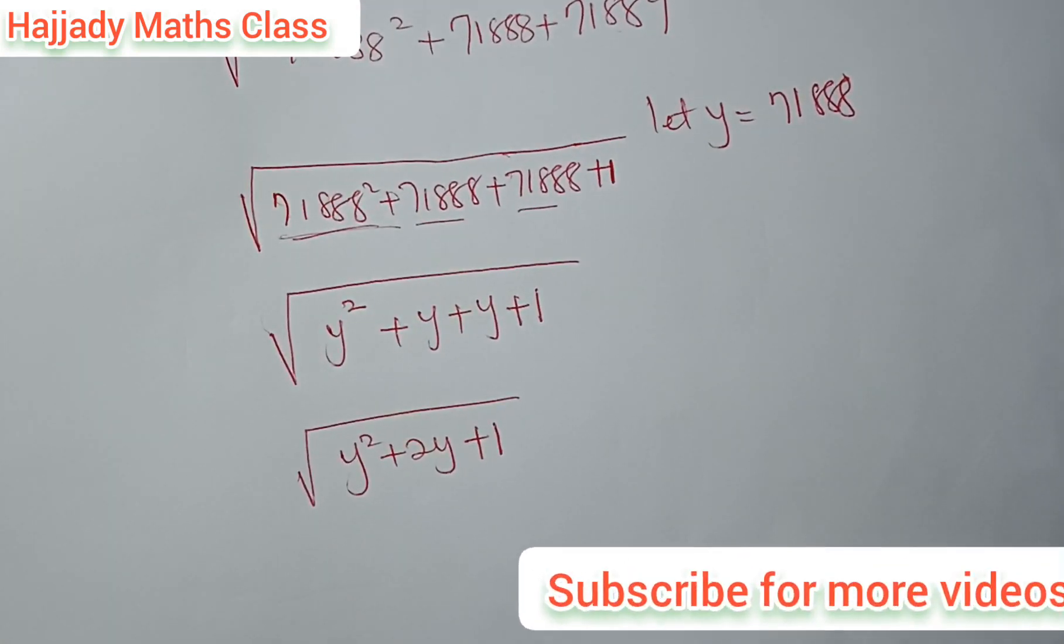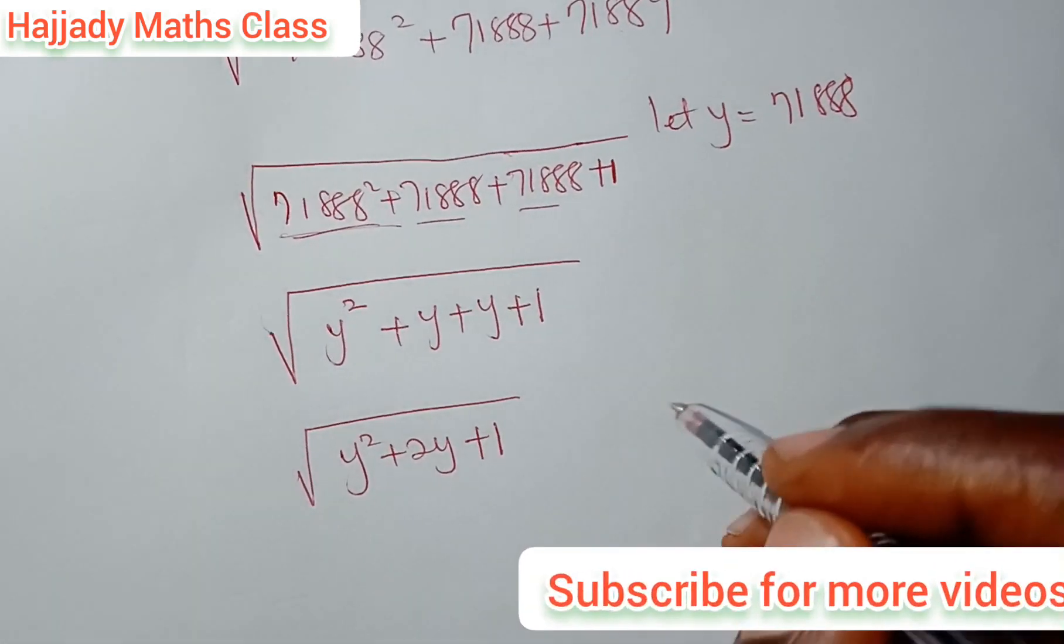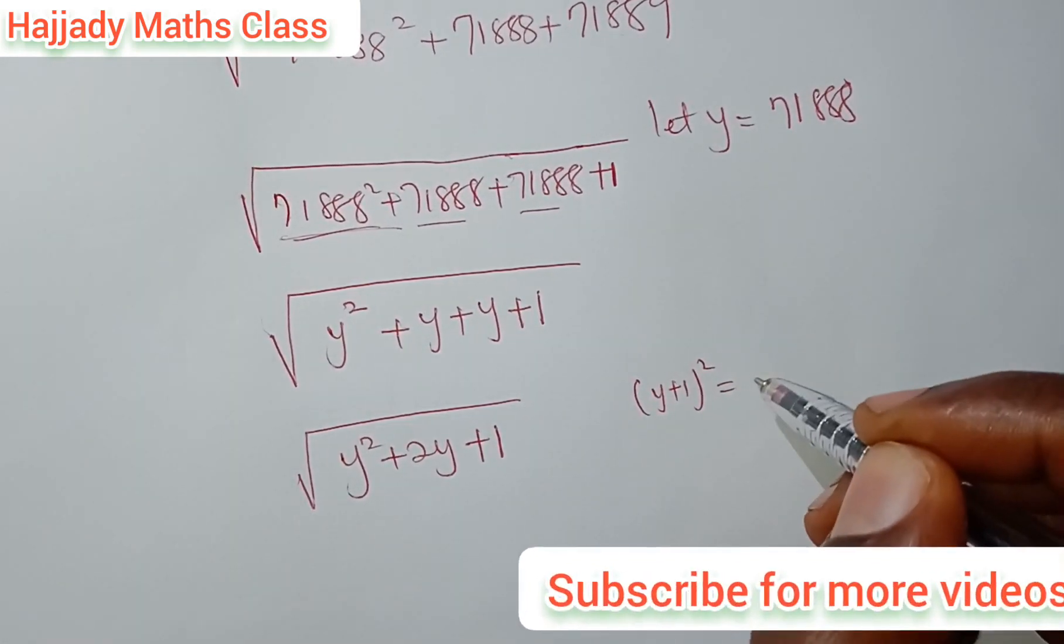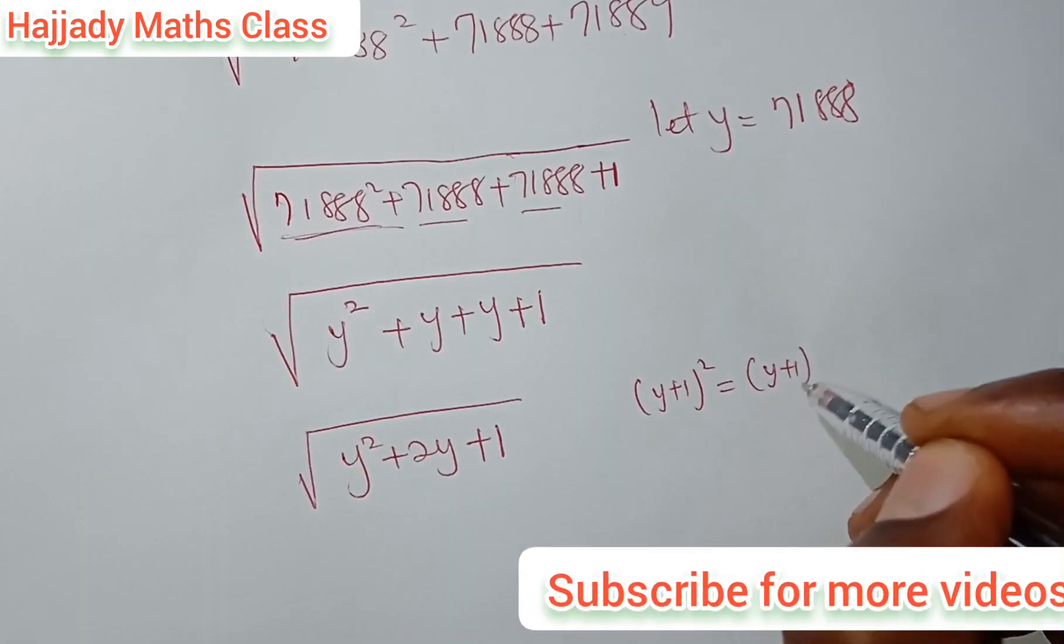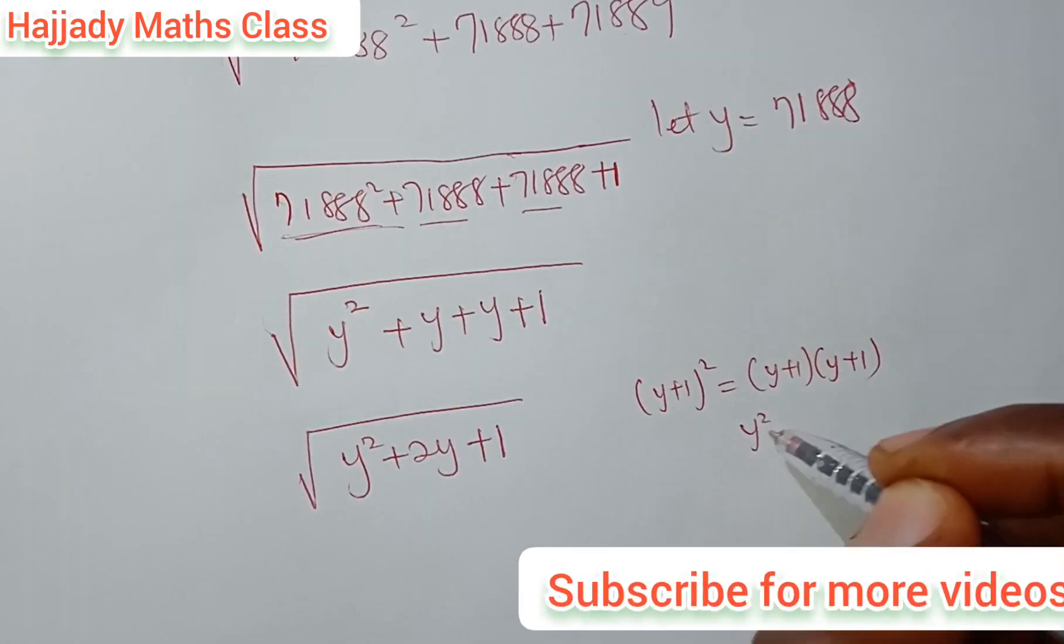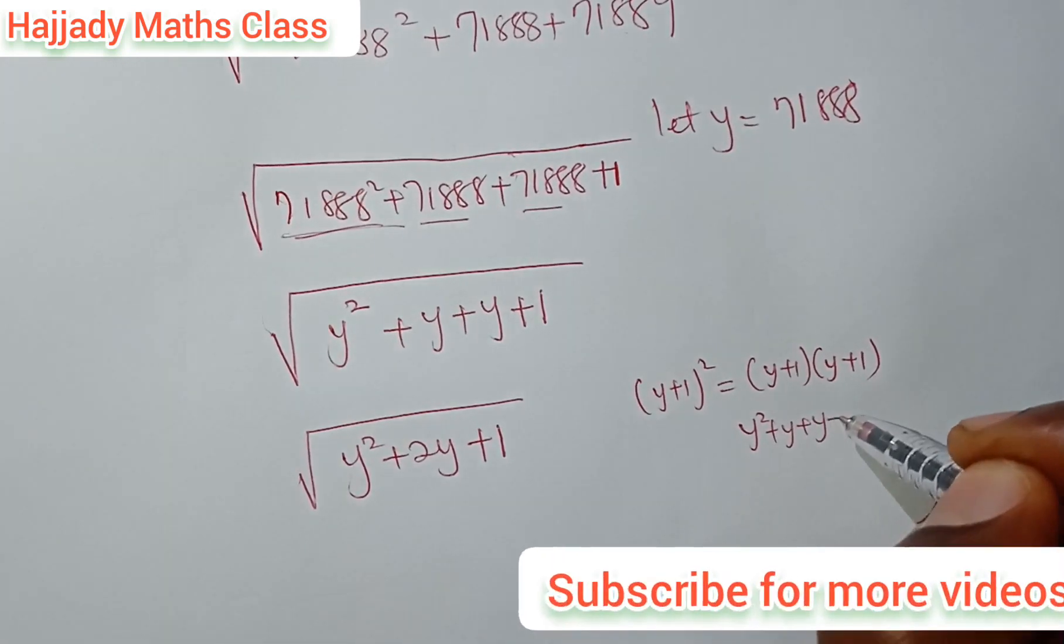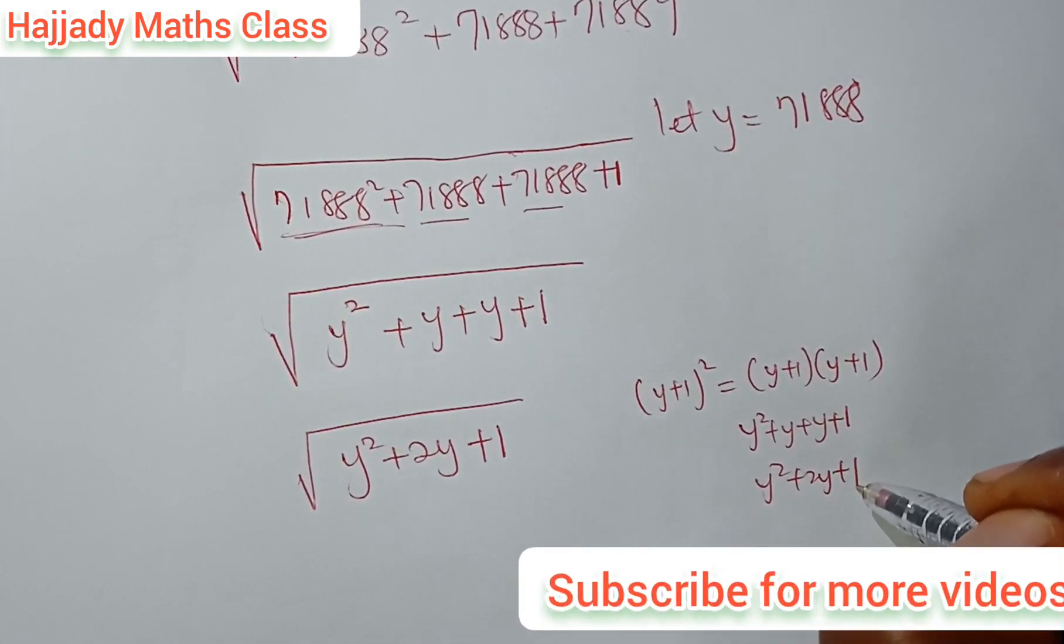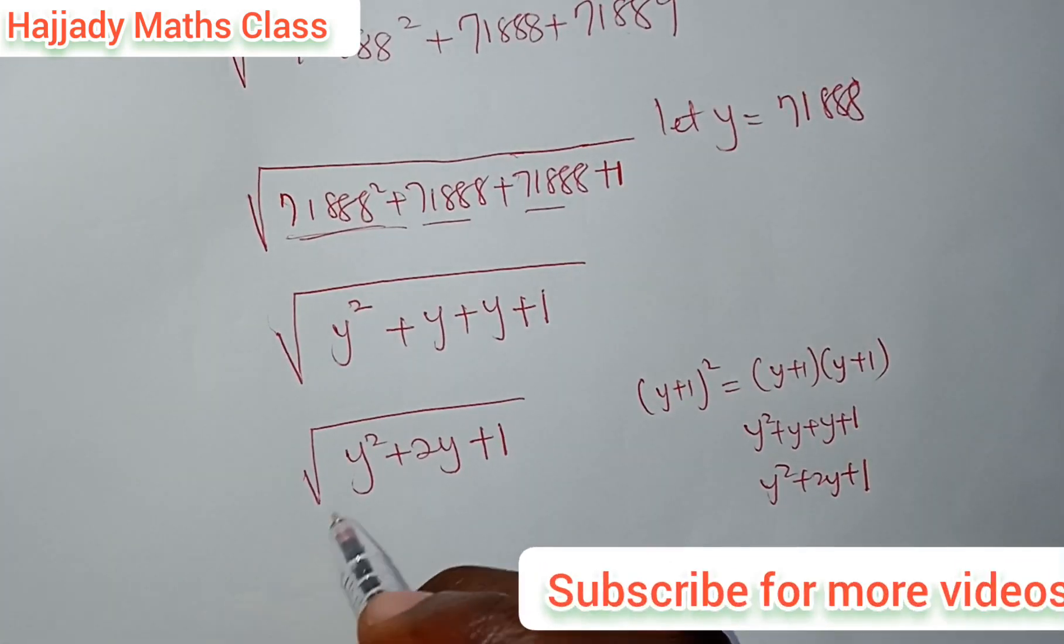You can see that. Now, we all know that if we expand (y plus 1) squared, it's the same thing as we have (y plus 1)(y plus 1), which is y² plus y plus y plus 1, which equals y² plus 2y plus 1. So the same thing will be used there.